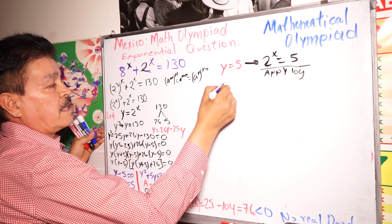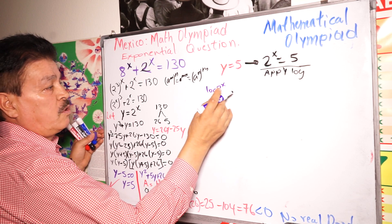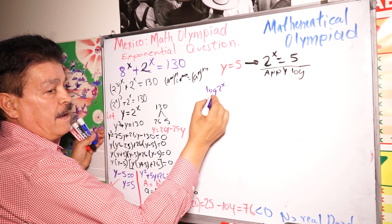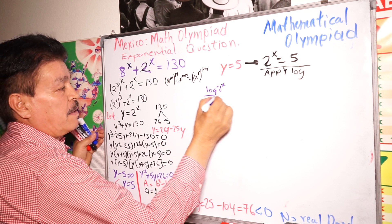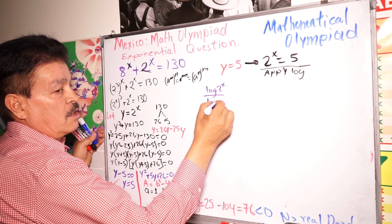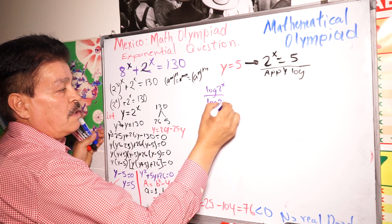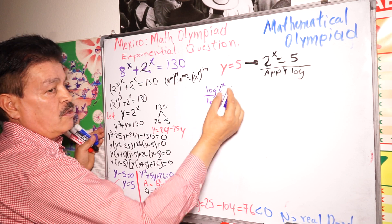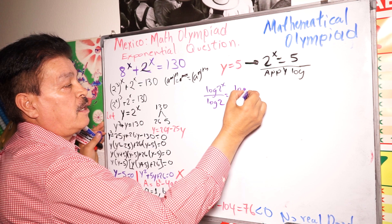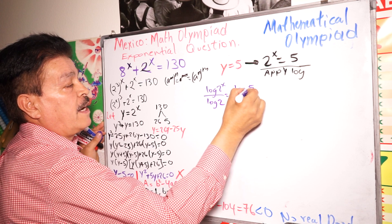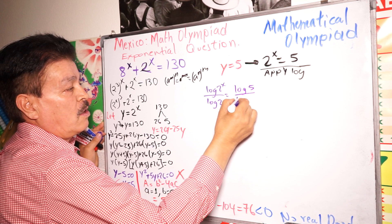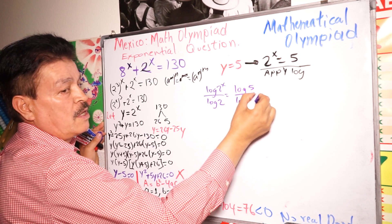Applying the logarithm: log of 2 to the X divided by log 2 equals log 5 divided by log 2. Using the rule that log C to the X divided by log C to the B gives X equals log base C of B.